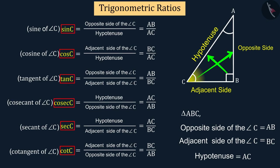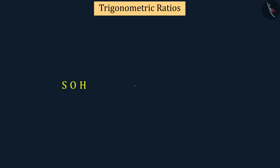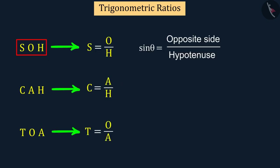In an easier way, you can remember these trigonometric ratios like SOH CAH TOA, which we can write as: S-O-H, C-A-H, T-O-A.